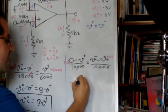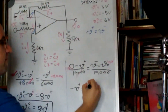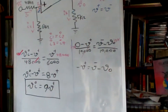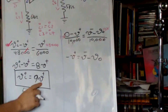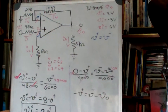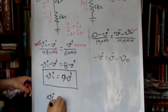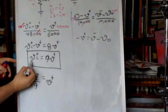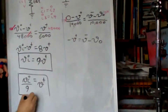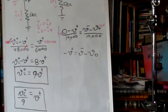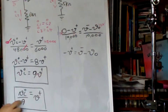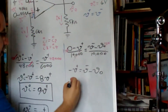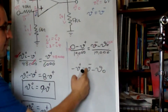Now I have that minus V plus equals minus V minus minus V out. From the earlier equation, dividing by 9 gives Vi over 9 equals V plus. Since V plus equals V minus, I can replace V minus with V plus. So I have minus V plus equals minus V plus minus V out.